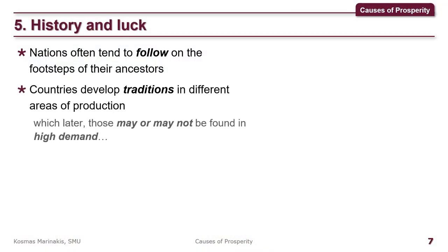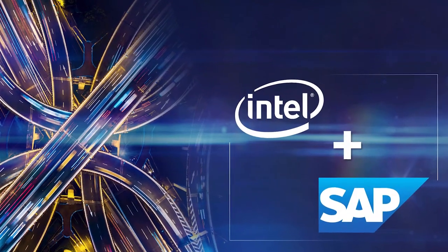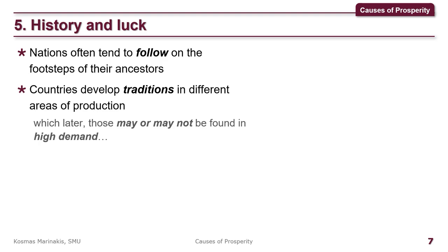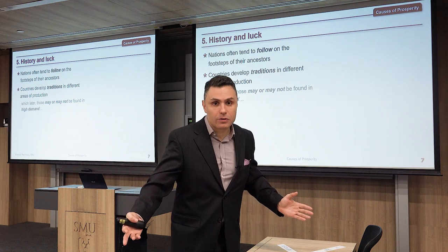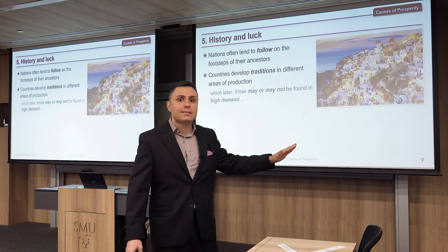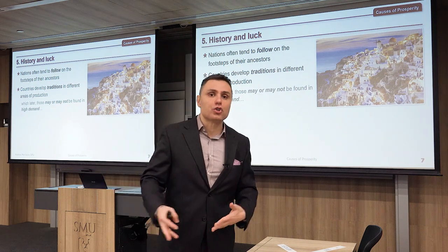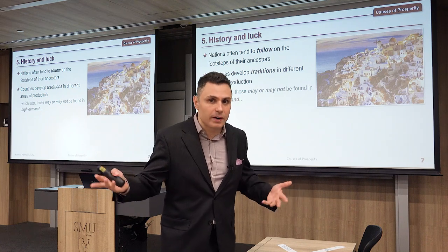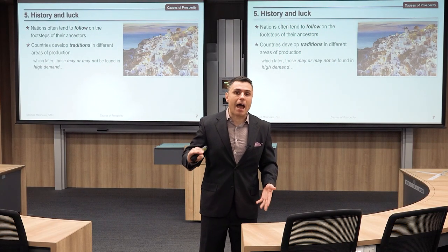Countries therefore develop traditions in particular areas — Italians in shoemaking, Germans in engineering, Americans in services, the Swiss in banking. If what you develop a tradition in later becomes trendy or globally demanded, you become a winner. For example, what happened with the Greek island of Santorini: it ranks in the top three for almost every tourist-related ranking, and in the last 30 years it has risen above the average GDP of the rest of Greece.